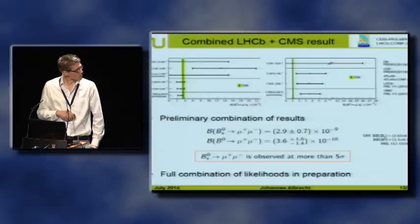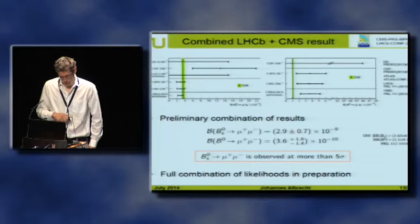These results are combined in a preliminary combination. The combination gives a branching fraction for Bs→μμ of 2.9 ± 0.7 × 10⁻⁹ — very good agreement with the standard model. For B0→μμ, the combination is about 3.5 times above the standard model. The significance is on the edge of 3 sigma, but we need to wait for a full combination of likelihoods later this year to make a real statement about the significance.